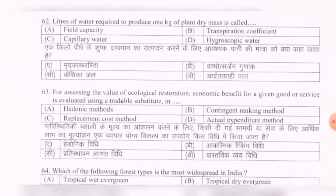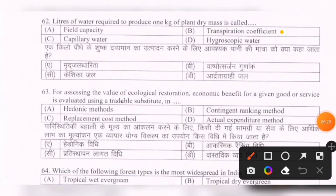Next question: Liters of water required to produce 1 kg of plant dry mass is called — options are: field capacity, transpiration coefficient, capillary water, hygroscopic water. The correct option is B — transpiration coefficient.